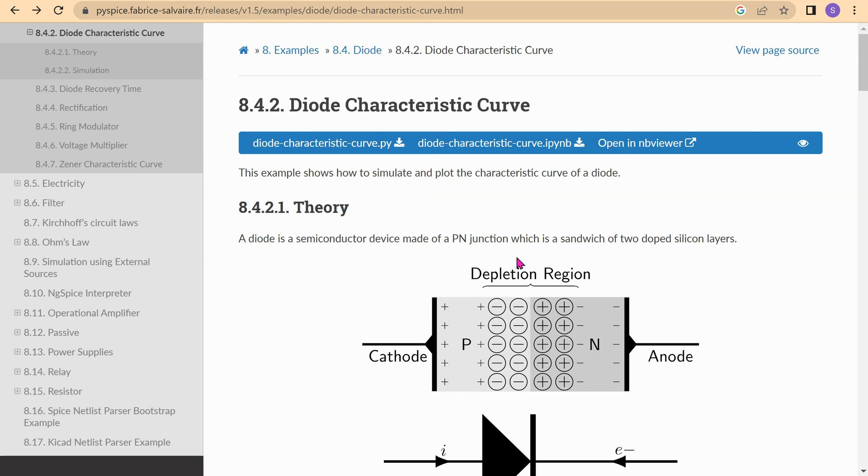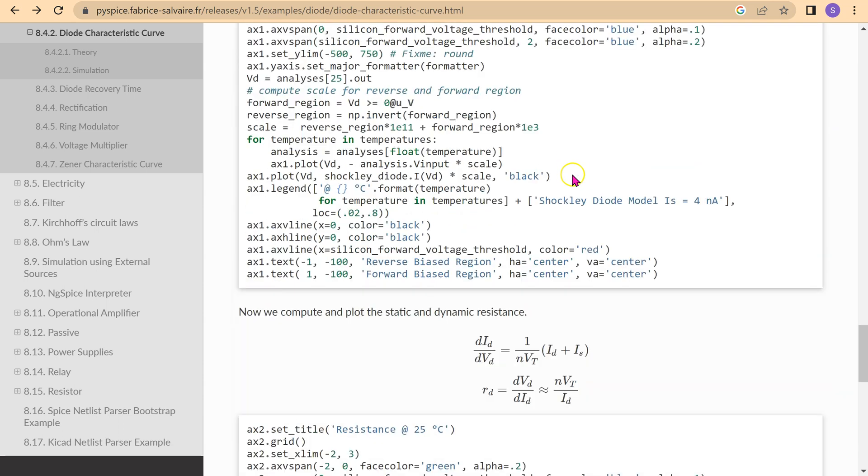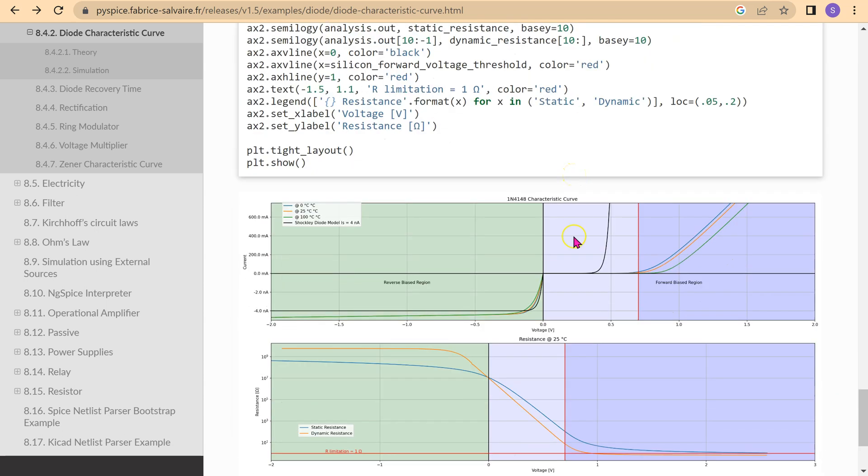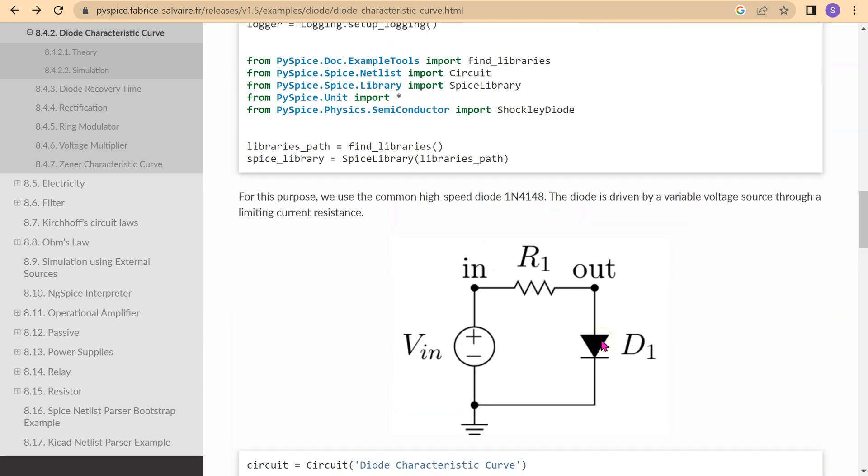PySpice comes with an inbuilt example for investigating diode characteristics. This example can be accessed here online. It generates nice-looking diode characteristics plots. However, this example has some issues. The simulation circuit includes a resistor, which is not really needed, and if chosen improperly would impact the results.